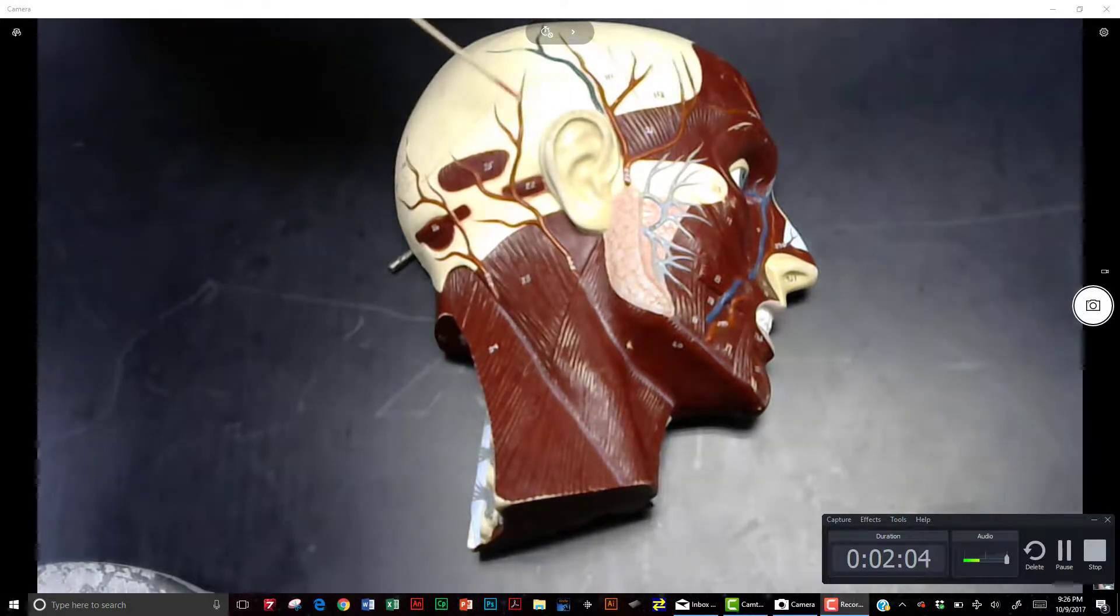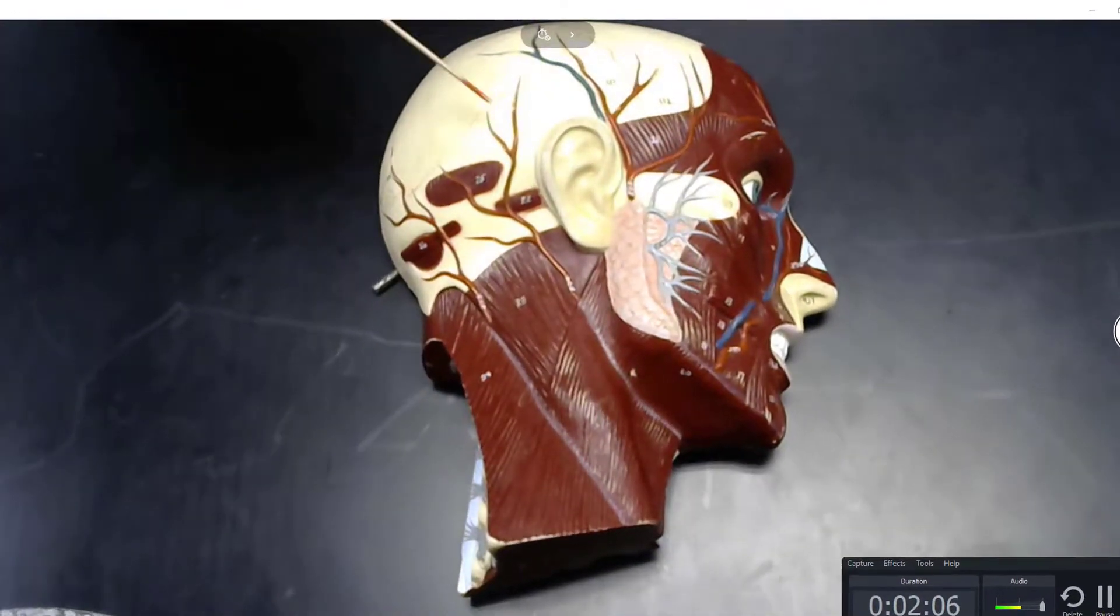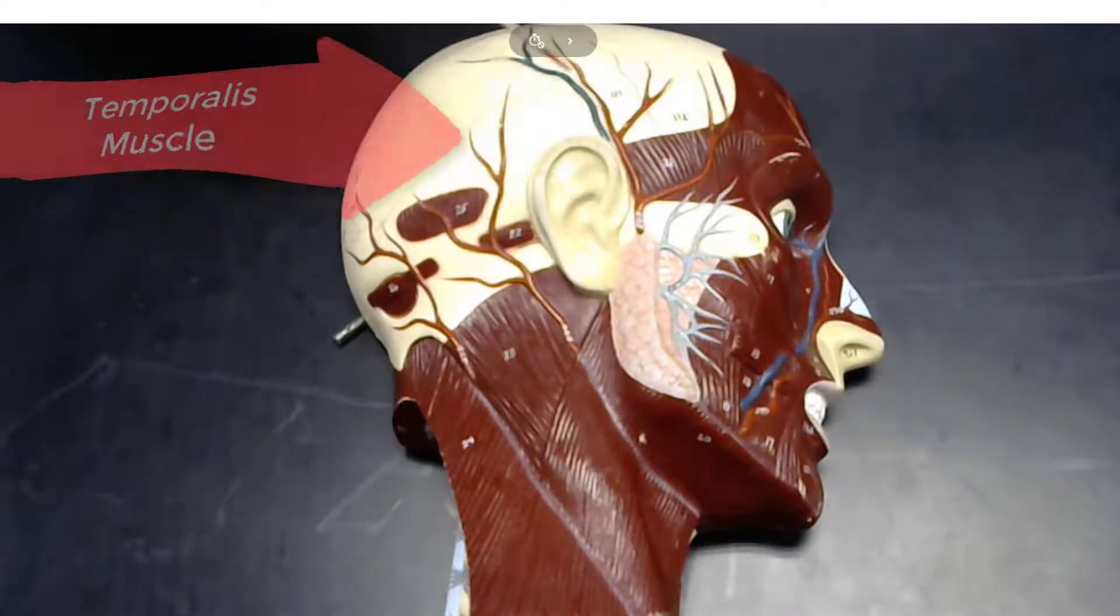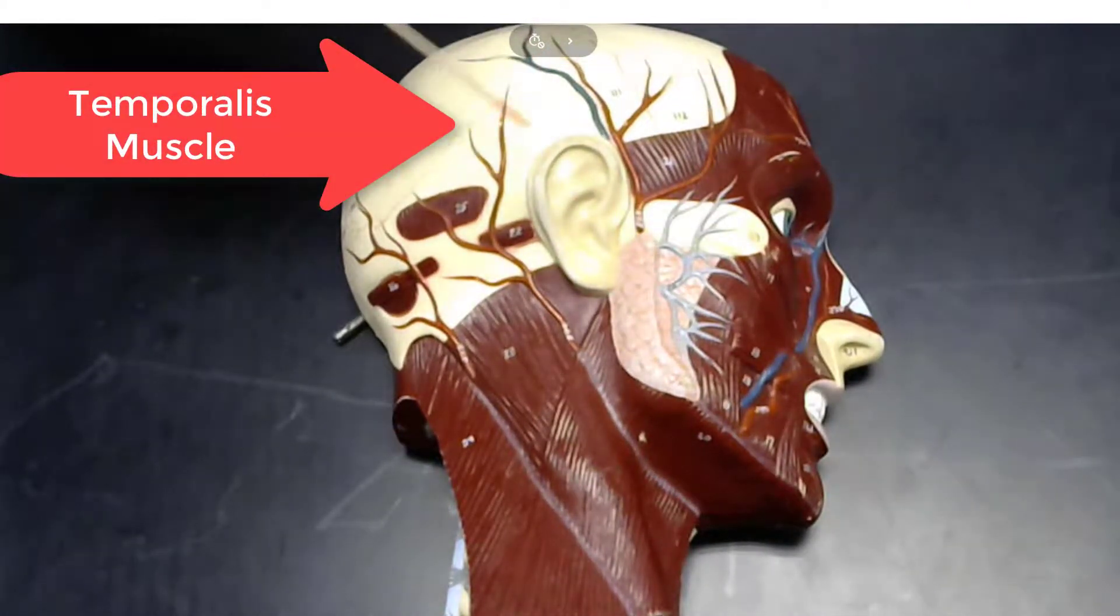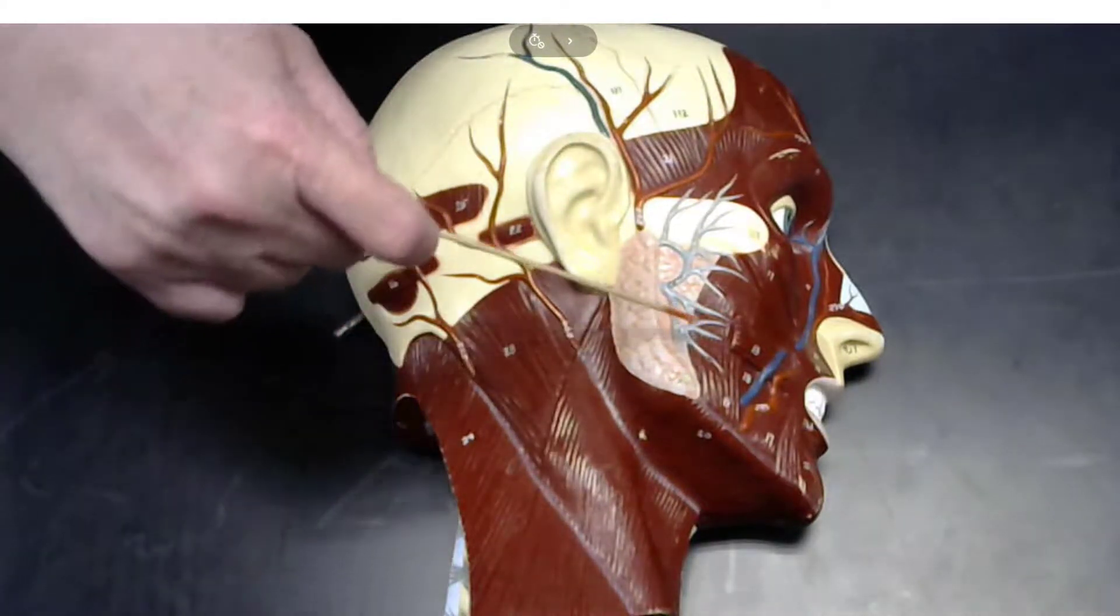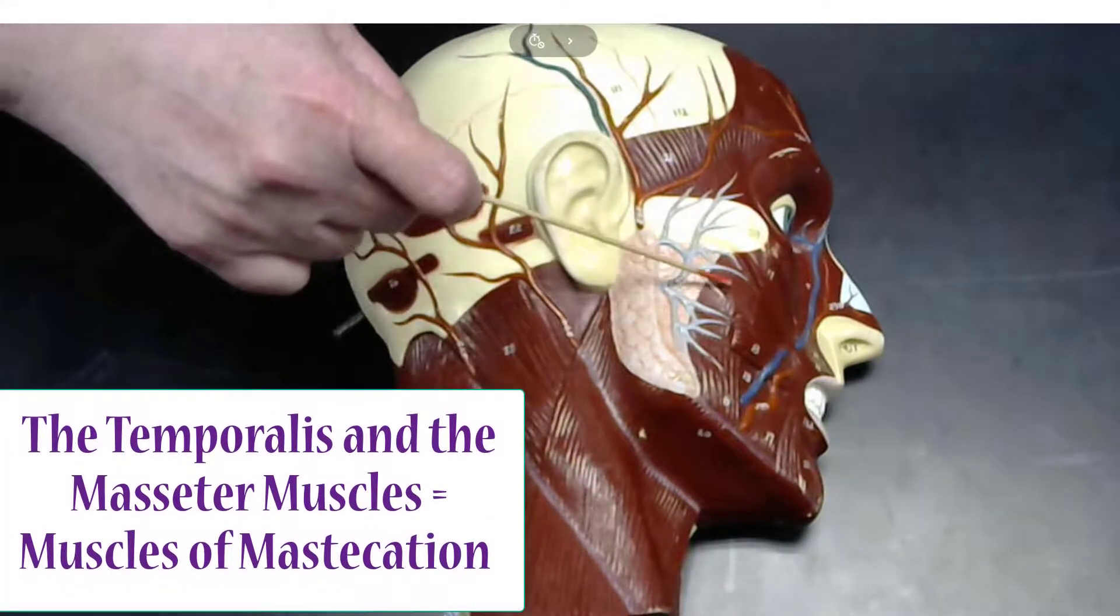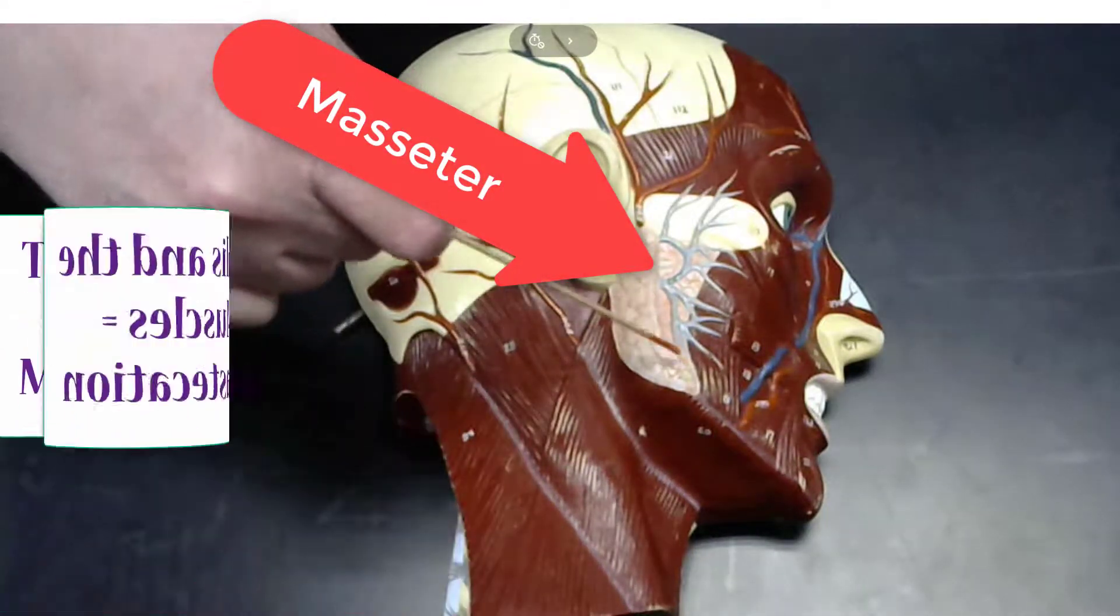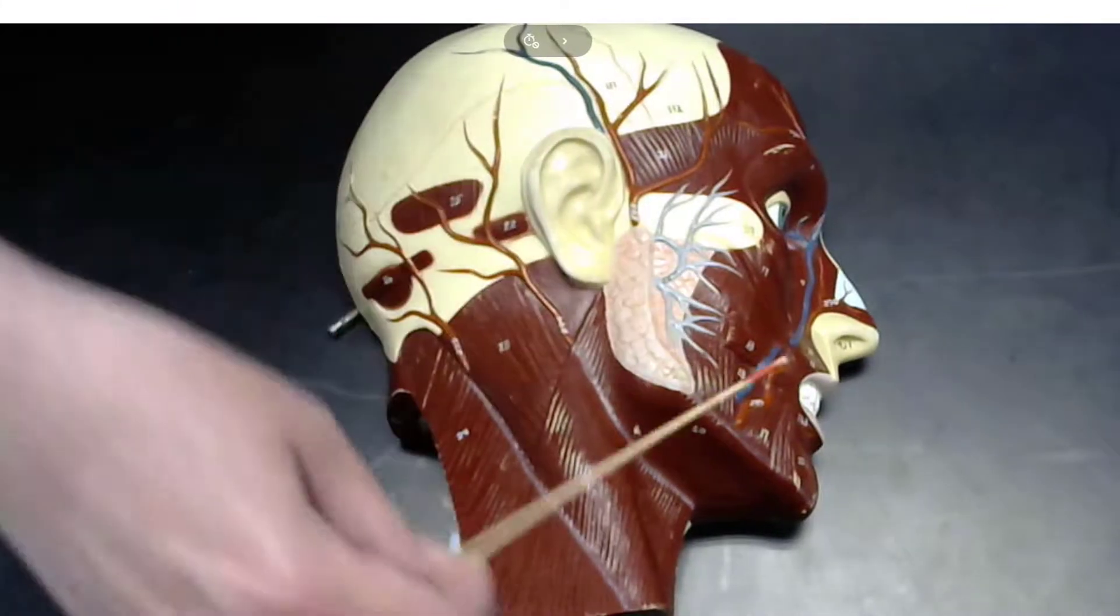This one doesn't have it, but the temporalis muscle would be over the temporal bones in this area. The temporalis muscle is one of the muscles of mastication, along with the masseter. The masseter is located here, and it's also located underneath this fat as well, but we can see it in the model here.